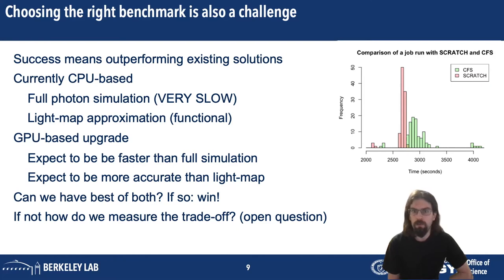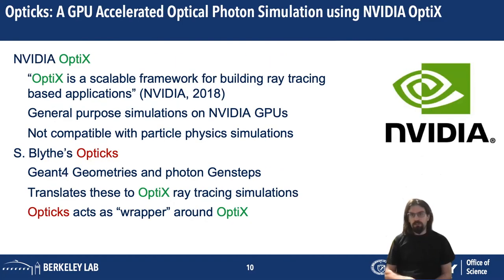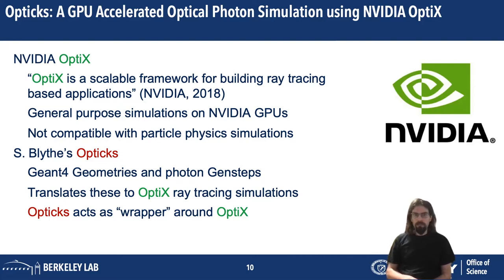If it does so, excellent. If it does not, then we need to be able to measure the trade-off between these, and that remains an open question. There are two major components, both called Optics, so I have used a color coding system: green for the NVIDIA system and red for Simon Blythe's system. NVIDIA's Optix is a scalable framework for building ray tracing-based applications — a general purpose ray tracing solution designed to carry simulations on NVIDIA GPUs. What it's not is a purpose-built particle physics simulation; it's not designed to take particle physics inputs. Simon Blythe has built Opticks, which takes NVIDIA's Optix, imports Geant4 geometries and Photon Gencept into NVIDIA's framework. Blythe's Opticks acts as a wrapper around NVIDIA's Optix, allowing you to import a particle physics simulation into that framework and use the GPUs.